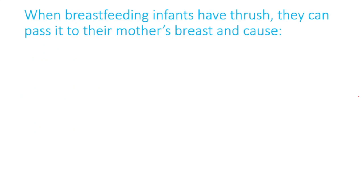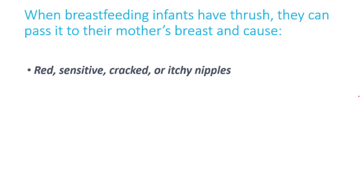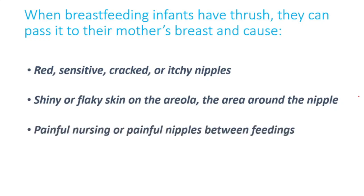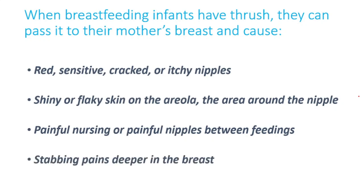When breastfeeding infants have thrush, they can pass it to their mother's breast and cause red and sensitive cracks or itching nipples, shiny or flaky skin on the areola — the area around the nipple — painful nursing or painful nipples between feedings, and stabbing pains deeper in the breast.